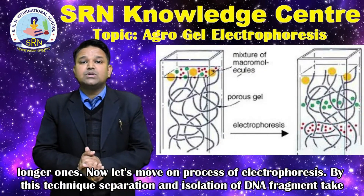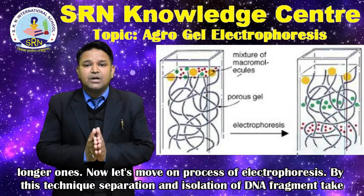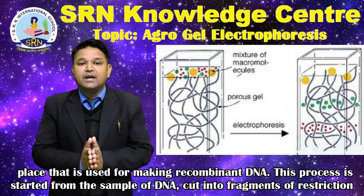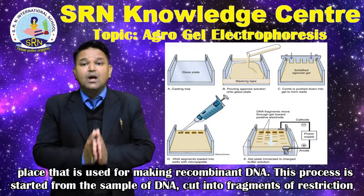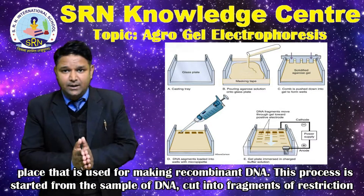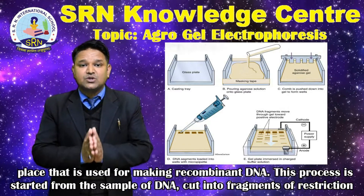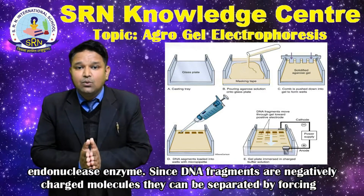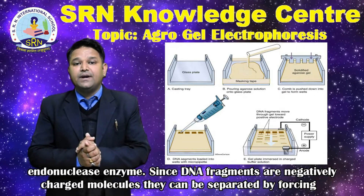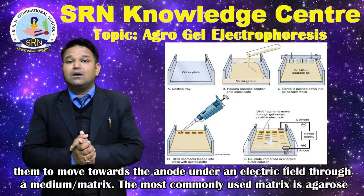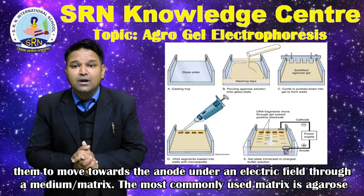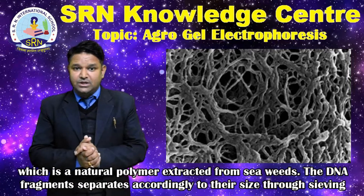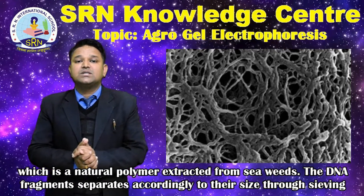Now, let's move on to the process of electrophoresis. By this technique, separation and isolation of DNA fragments take place, which are used for making recombinant DNA. This process starts from a sample of DNA cut into fragments by restriction endonuclease enzyme. Since DNA fragments are negatively charged molecules, they can be separated by forcing them to move towards the anode under an electric field through a matrix. The most commonly used matrix is agarose gel, which is a natural polymer extracted from seaweed.